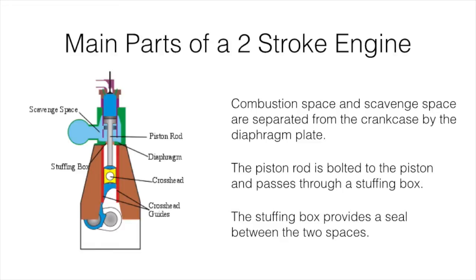The piston rod is bolted to the piston and passes through a stuffing box mounted in the diaphragm plate. The stuffing box provides a seal between the two spaces, stopping oil from being carried up to the scavenged space and the scavenged air leaking into the crankcase.